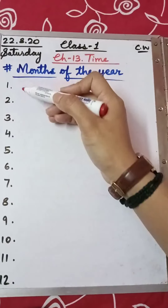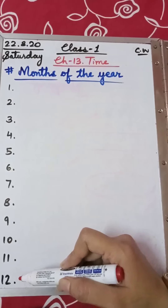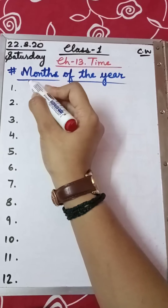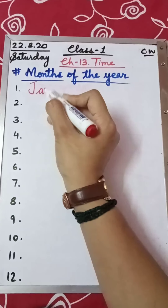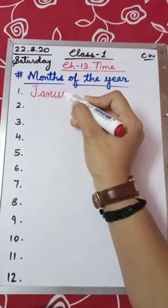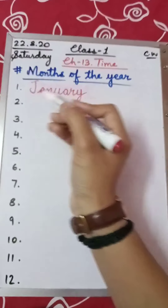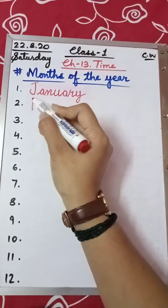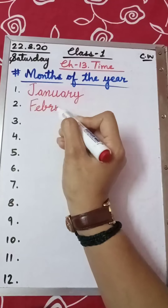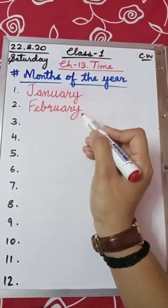How many months are there in a year? 12. The first month of the year is January — J-A-N-U-A-R-Y, January. Next is February — F-E-B-R-U-A-R-Y, February.